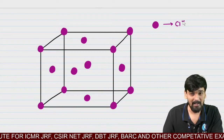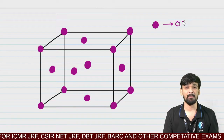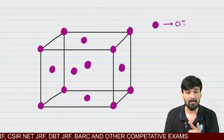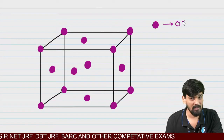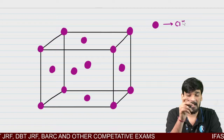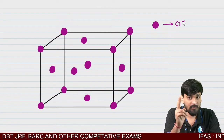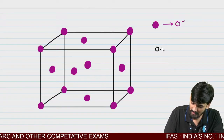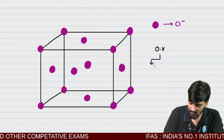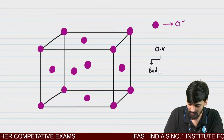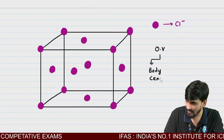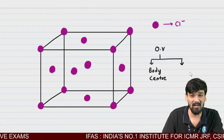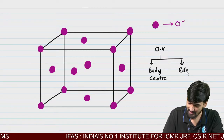Now, where is Na+ in this cubic system? Na+ occupies the octahedral voids. Octahedral voids can be found in two places: first, on the body center, and second, along the edge center.